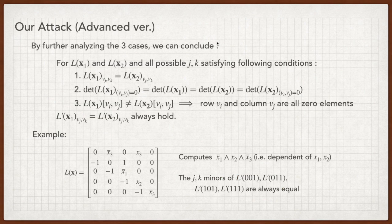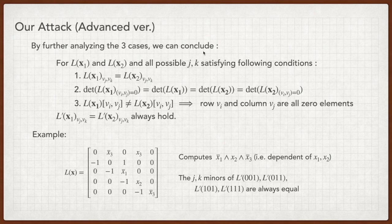By further analyzing the three cases, we conclude that for L of X1 and L of X2 satisfying the following three conditions, the minors of L prime of X1 and L prime of X2 are equal, regardless of the randomness injected by the RLS. We also give an example using the conclusion. One can easily check that for possible JK, the JK minor of these four matrices are equal. Thus, our attack can apply on it.